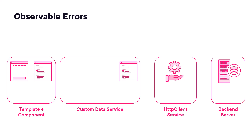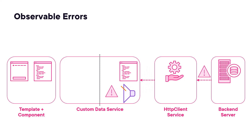The code in our custom data service that calls the HTTP Client Service is our first line of defense against HTTP errors. It's here that we have the observable returned by the HTTP Client Service. If the backend server generates an error, it returns that error in the HTTP response. The HTTP Client Service then uses the returned observable to emit an error notification with error details. This error observable ends and won't emit any more items. It's here in our custom data service that we catch that error, which prevents the error from continuing down the subscription chain.